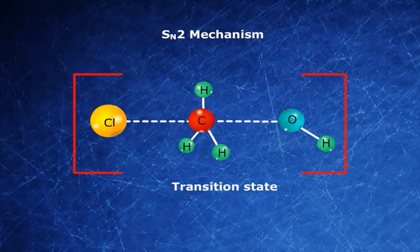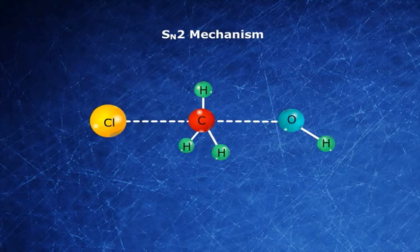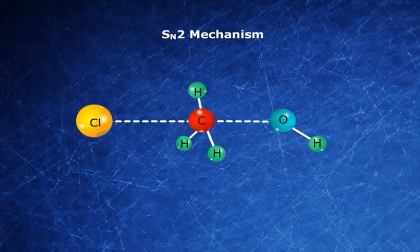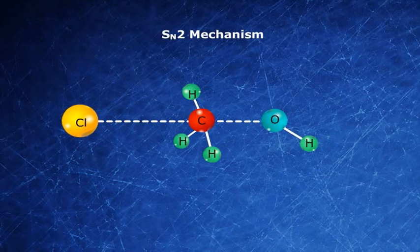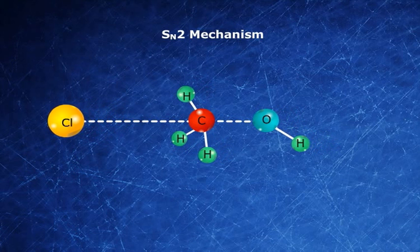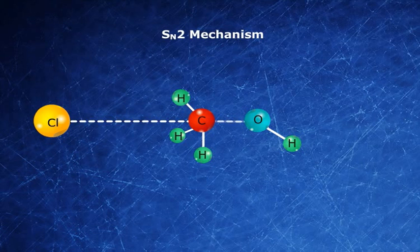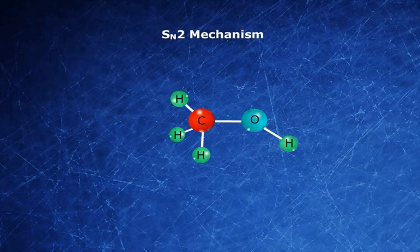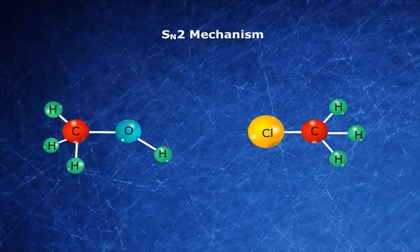And eventually breaks. Now observe that the configuration of the carbon atom before the reaction is different from its configuration after the reaction. Why does that happen? This happens because the attack takes place from the backside, so SN2 mechanism causes inversion of configuration.